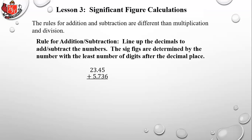For example: 23.45 plus 5.736. You line up the decimals and add normally, but you draw a line at the least precise number. 23.45 has two digits after the decimal — the 4 and the 5 — while 5.736 has three digits. So you place a line next to the 5 in 23.45 and run it down through the answer. The significant figures are cut off at that line.